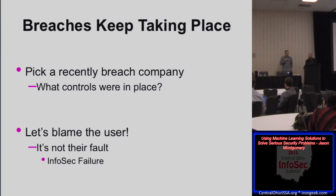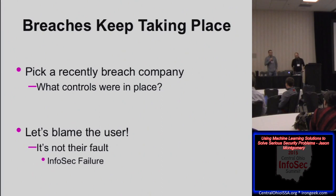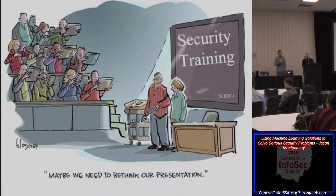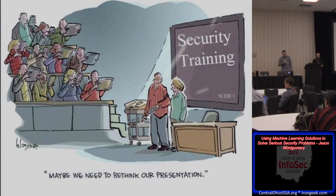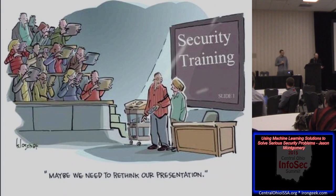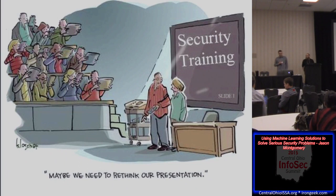Breaches keep taking place — Sony, Home Depot, Anthem. What security controls do you think they had in place? They probably had next-generation firewalls and did annual penetration tests — a lot of things we all tell everyone to do. Usually it has something related to how they have controls around users. As InfoSec people, we always say 'stupid user,' but it's really not their fault. If we're letting the user do those things, it's on us. It's not their fault they clicked the link. It's an industry-wide development, IT, and InfoSec failure to protect our networks.